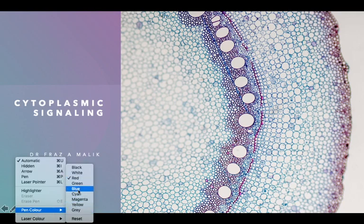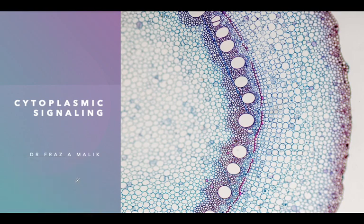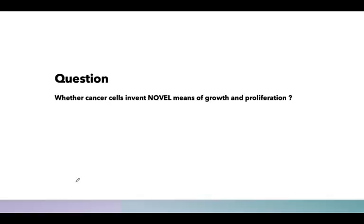Before we begin our discussion, whatever we have studied so far is saying that cancer cells invent novel means of growth and division — or is it the same setup being utilized by the cancer cells? According to current knowledge, it has been established that cancer cells don't invent any additional means of growth; instead, the already available cellular machinery is being utilized by them.